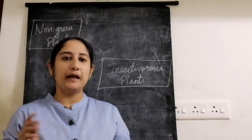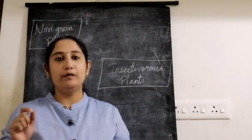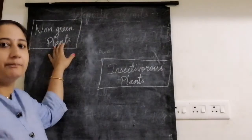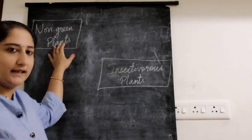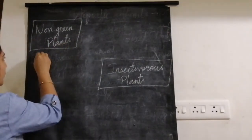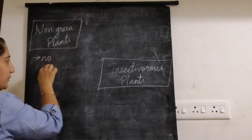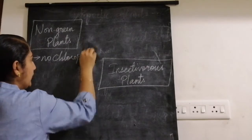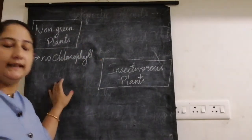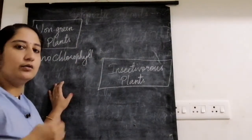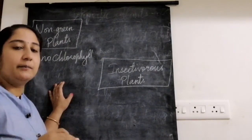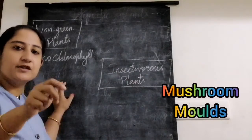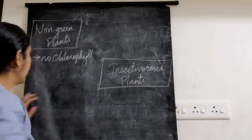These non-green plants are also called saprophytes. They do not have chlorophyll, so they do not prepare food by themselves. How do they get their food? They depend on other organisms — they live on other organisms and absorb nutrients from them.